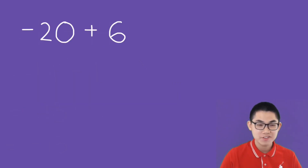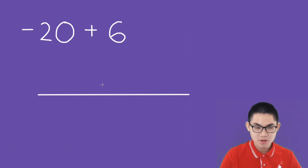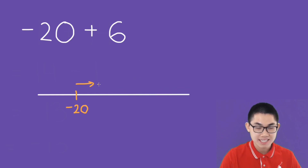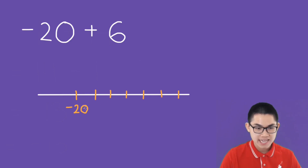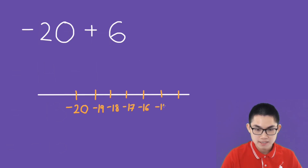What is negative 20 plus 6 using the number line? We put negative 20 and then we move to the right 6 times: 1, 2, 3, 4, 5, 6. Negative 20, we have negative 19, negative 18, negative 17, negative 16, negative 15, and negative 14. So the answer is negative 14.